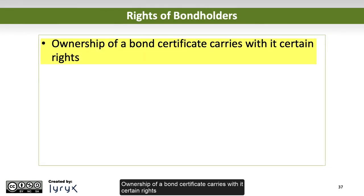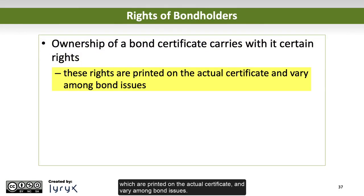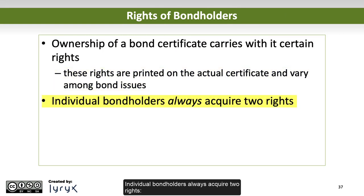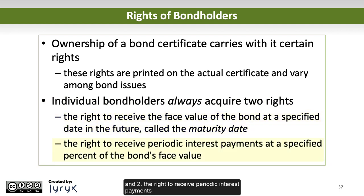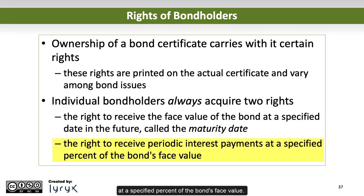Ownership of a bond certificate carries with it certain rights, which are printed on the actual certificate and vary among bond issues. Individual bondholders always acquire two rights. One, the right to receive the face value of the bond at a specified date in the future, called the maturity date. And two, the right to receive periodic interest payments at a specified percent of the bond's face value.